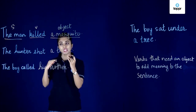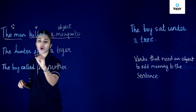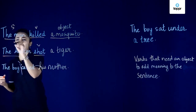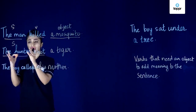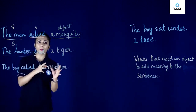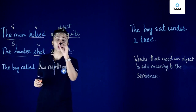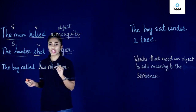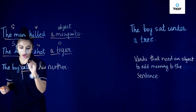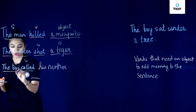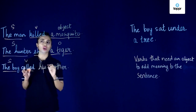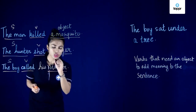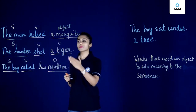Let's look at the second sentence and do the same drill. The hunter shot a tiger — 'shot' is our verb. Who shot a tiger? The hunter, so the hunter becomes the subject of the verb 'shot.' The hunter shot whom? Tiger — so tiger is the object. Now the third sentence: the boy called his mother. 'Called' is our verb, 'boy' is our subject. Whom did the boy call? His mother — so mother becomes our object.